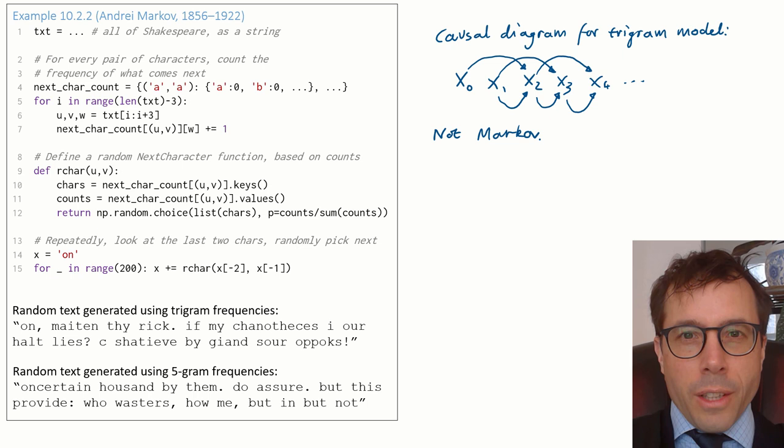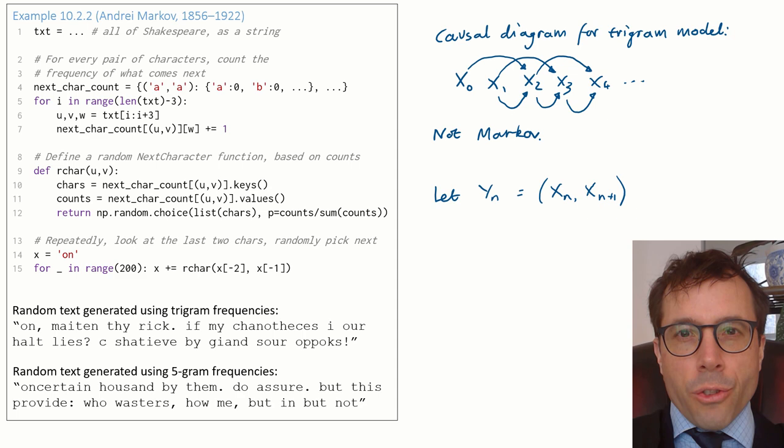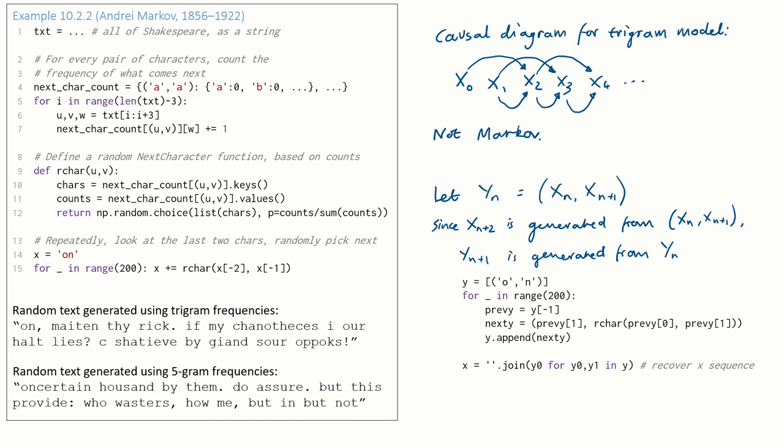Here's the answer. We just need to look at the sequence slightly differently. Let me define yn to be the pair xn, xn+1. In other words, the sequence of y's is a sliding window of length 2, sliding across the x sequence.